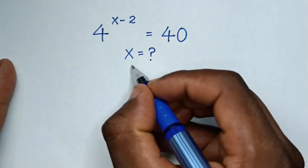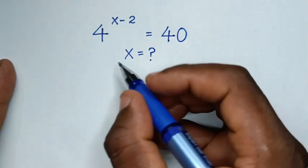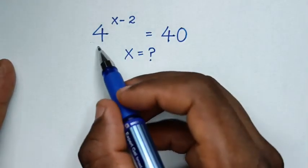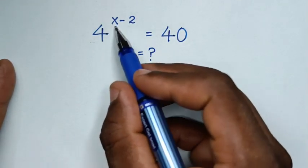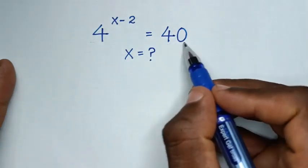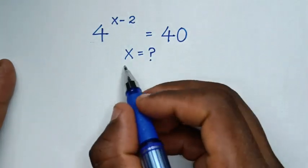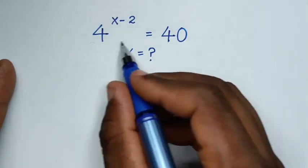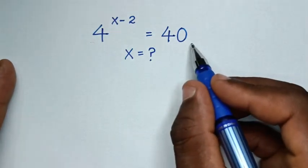Hello, you are welcome to solve this math problem which is 4 to the power of x minus 2 is equal to 40, to find the value of x from this equation.